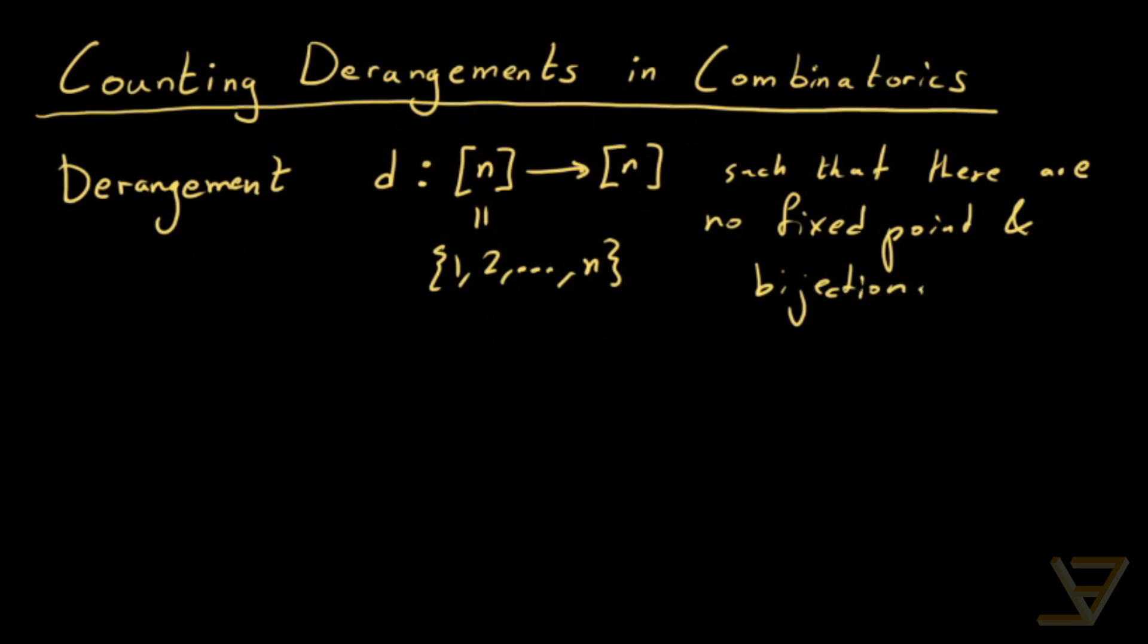So we have a bijection, and by a fixed point, we mean f of i equals to i. So none of the points map to themselves.